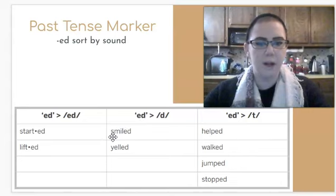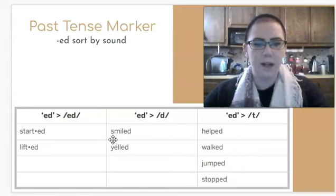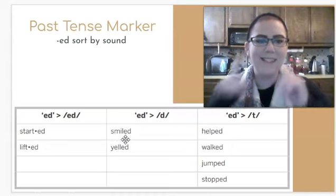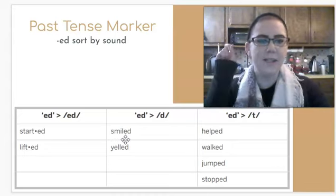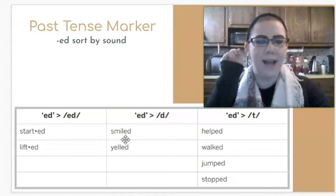Let's look at this word. The verb here is smile. I smile. Yesterday I smiled. It's not smile id, it's not smile t, it's smiled.